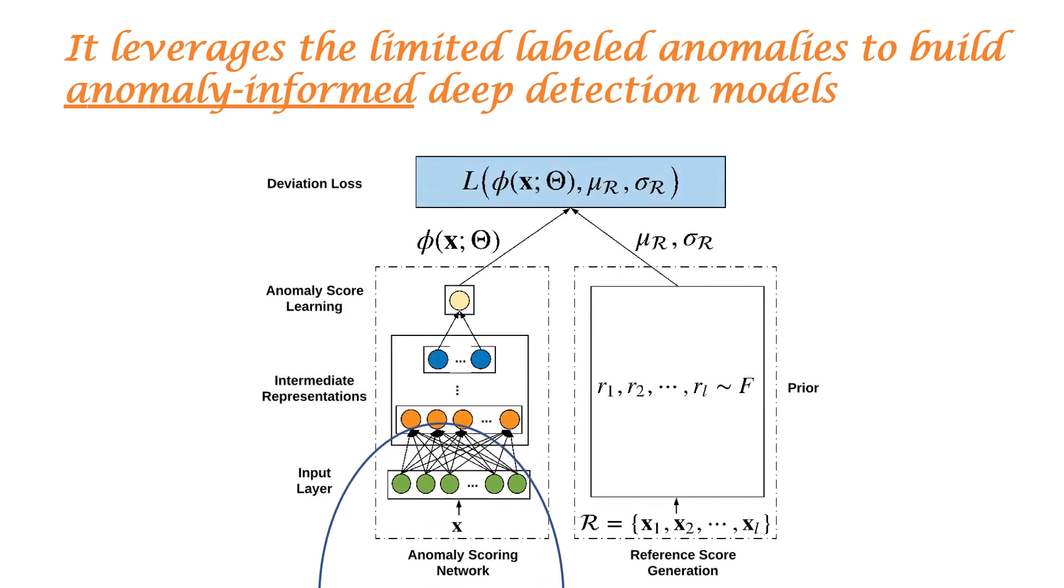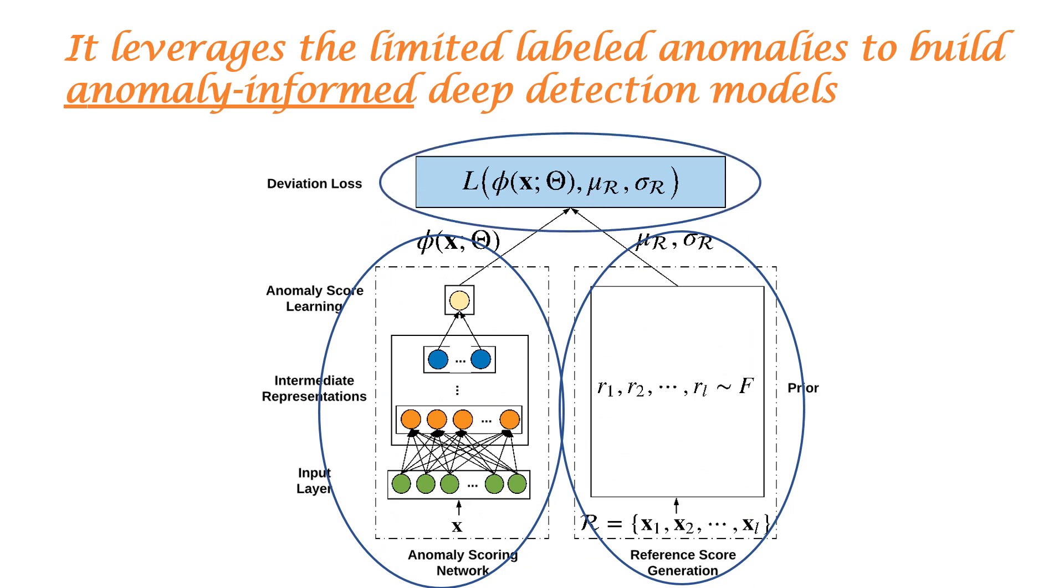It uses an anomaly-scoring network to assign anomaly scores to a given data instance, and defines a reference score generation component to generate a prior-driven anomaly score. These two outputs are input to a loss function called deviation loss to learn the anomaly scores.